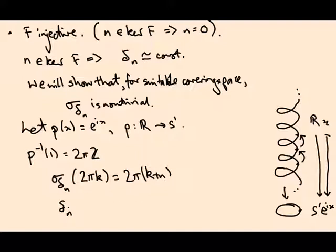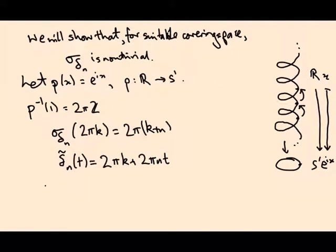Why is this? Well, delta n tilde, the lift of delta n starting at k, is exactly 2 pi k plus 2 pi n t. I claim that if you exponentiate this, what you get is delta n. Let's see. Exp i delta n tilde t, this is p of delta n tilde t, is e to the i 2 pi k, that's the identity, times e to the 2 pi n t i. And that is delta n t.